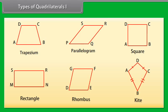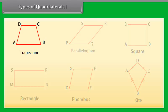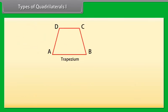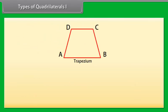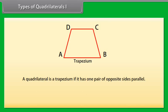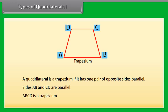Trapezium: A quadrilateral is a trapezium if it has one pair of opposite sides parallel. Here, opposite sides AB and CD are parallel, so ABCD is a trapezium.